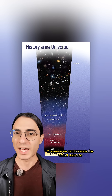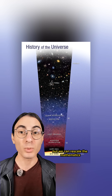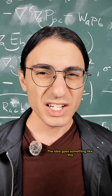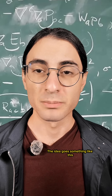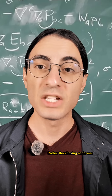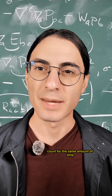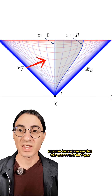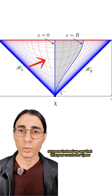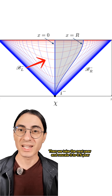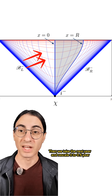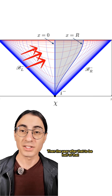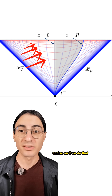Of course, we can't rescale the actual universe, but we can rescale the mathematics we use to make sense of it. The idea goes something like this: rather than having each year count for the same amount of time, suppose instead we say that this year counts for one year, then we take the next year and rescale it to half a year, then the year after that to be half of that, and so on.